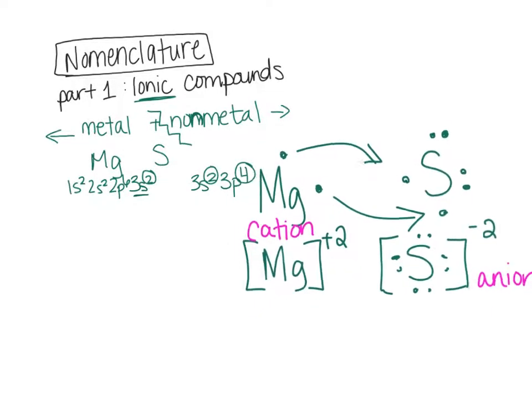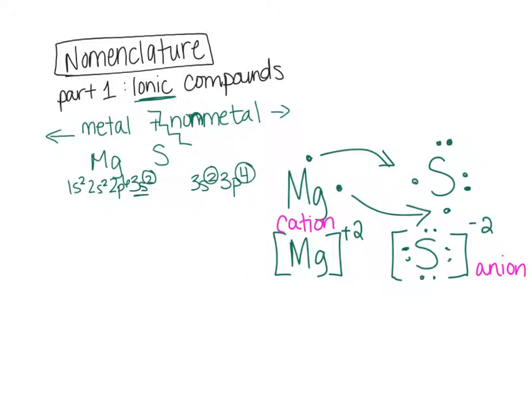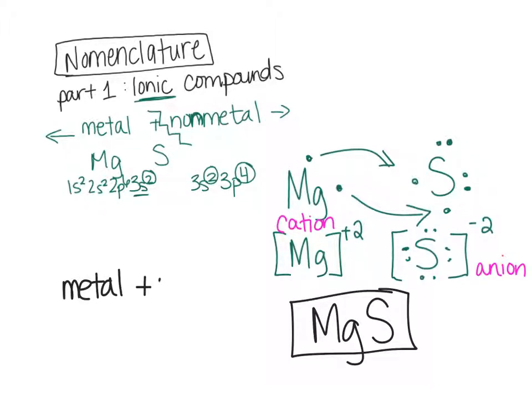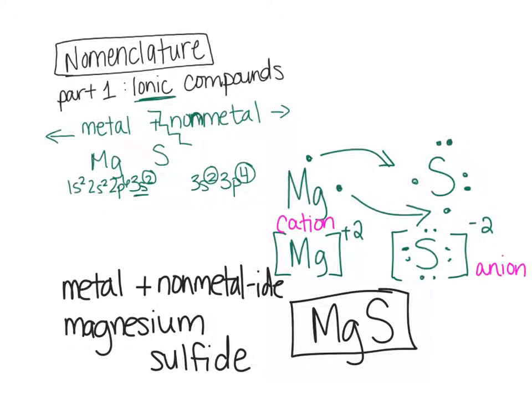Once we've seen that, we can recognize the ratio, so how many of each were needed in order to make this happen. And we see that magnesium, there's only one, and there's only one sulfur. So, we end up with our binary compound of magnesium sulfide. When you go to name your binary compounds, you always start with the metal, and then you do your non-metal with an -ide ending. So, for this one, we have magnesium sulfide.